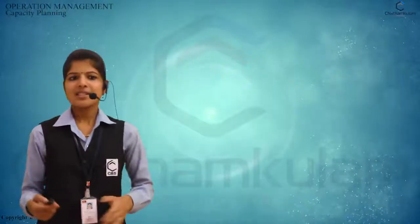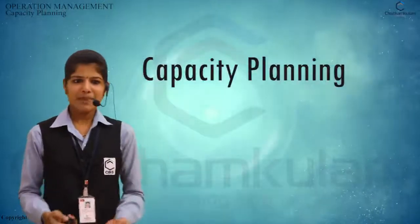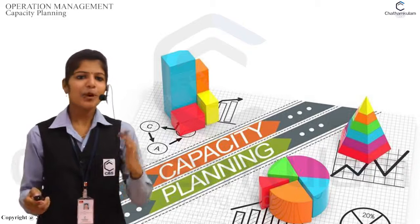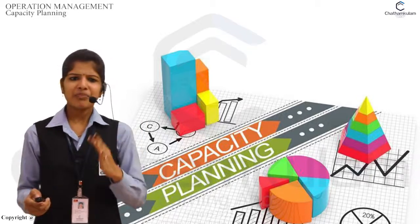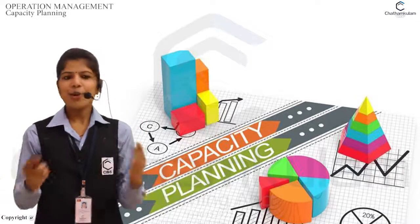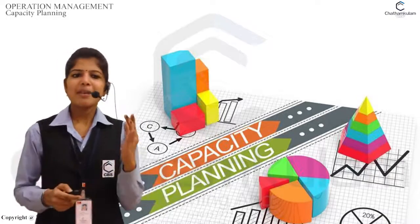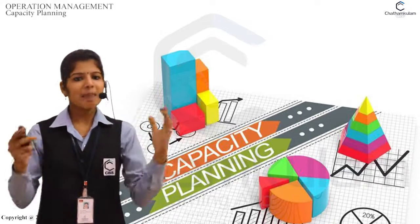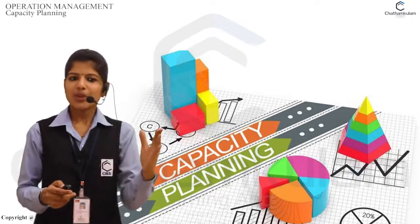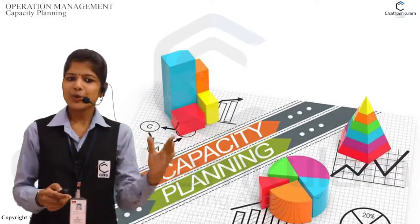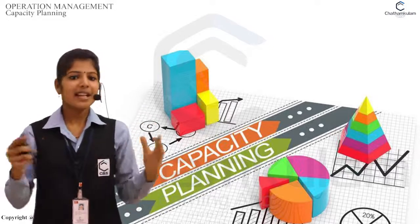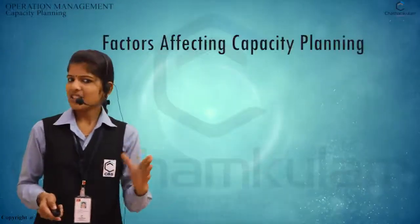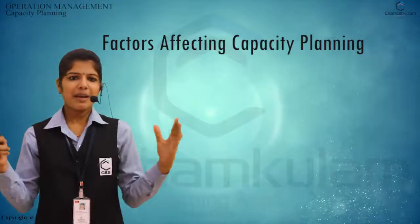Next we discuss capacity planning. Capacity planning is the aspect of production planning. Capacity is the ability to produce. Capacity planning is the process to identify the capacity of a production unit that is required for producing so as to meet the current and future demand. There are certain factors that may affect capacity planning.